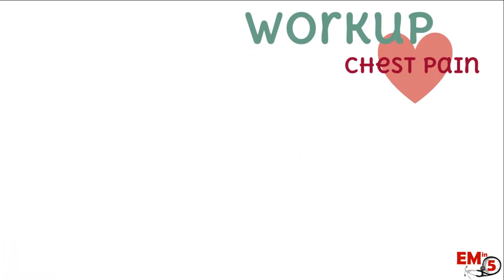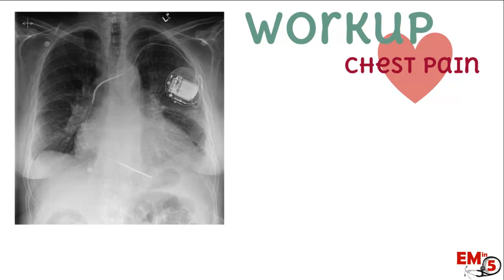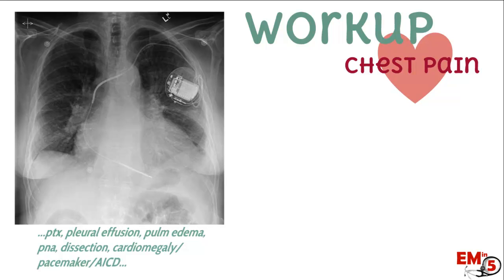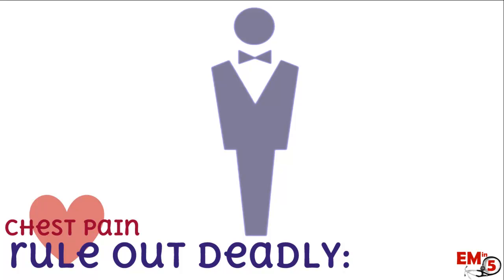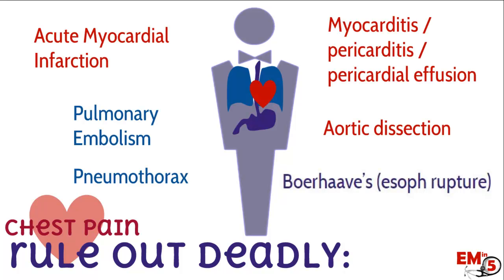For our workup of chest pain: we've done our IVO2 monitor, ABCs, focused H&P, and EKG. Now go ahead and get a chest X-ray on pretty much all of these patients — it will give you a lot of information. Consider labs such as troponin, D-dimer for PE, BNP for heart failure, and a blood gas. Imaging options include CT of the chest, angiography, or an echo. To review: always think about the deadly six and rule them out either with history and physical or with further testing.